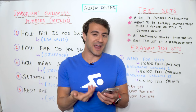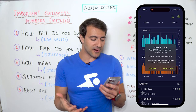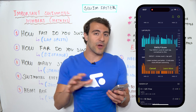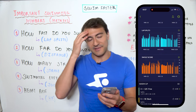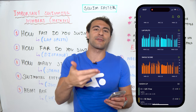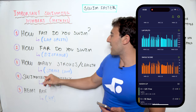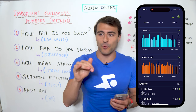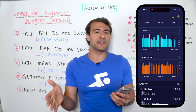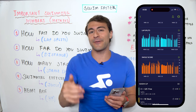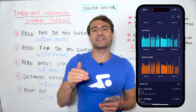The fourth metric is swimming efficiency — your SWOLF score, which works like golf: a lower number means a more efficient stroke. You calculate it by taking your stroke count and your lap split and adding them together, normalized to 25 meters. For example: if you push off the wall, take 10 strokes, and cover 25 meters in 15 seconds, your SWOLF score is 10 + 15 = 25.